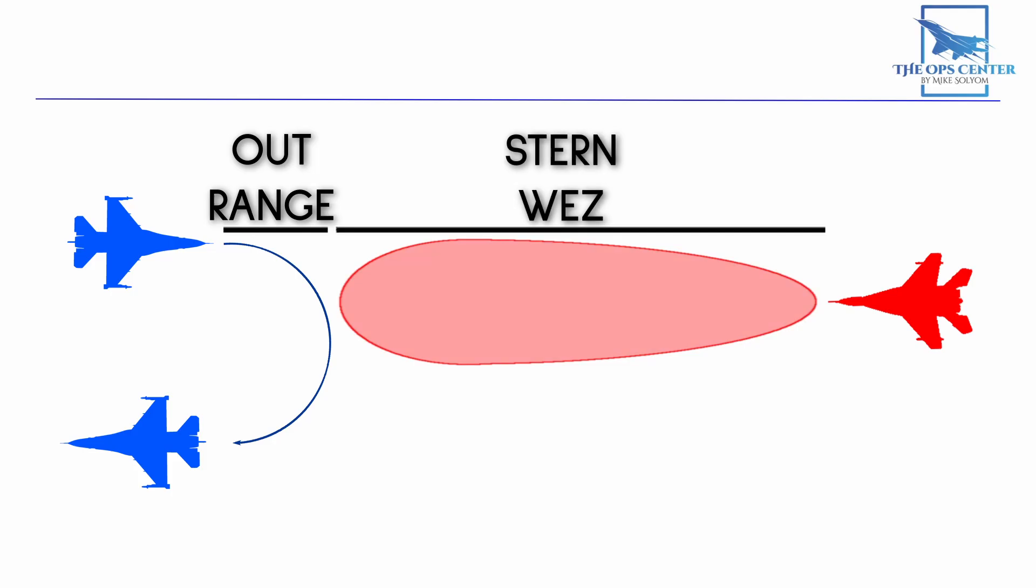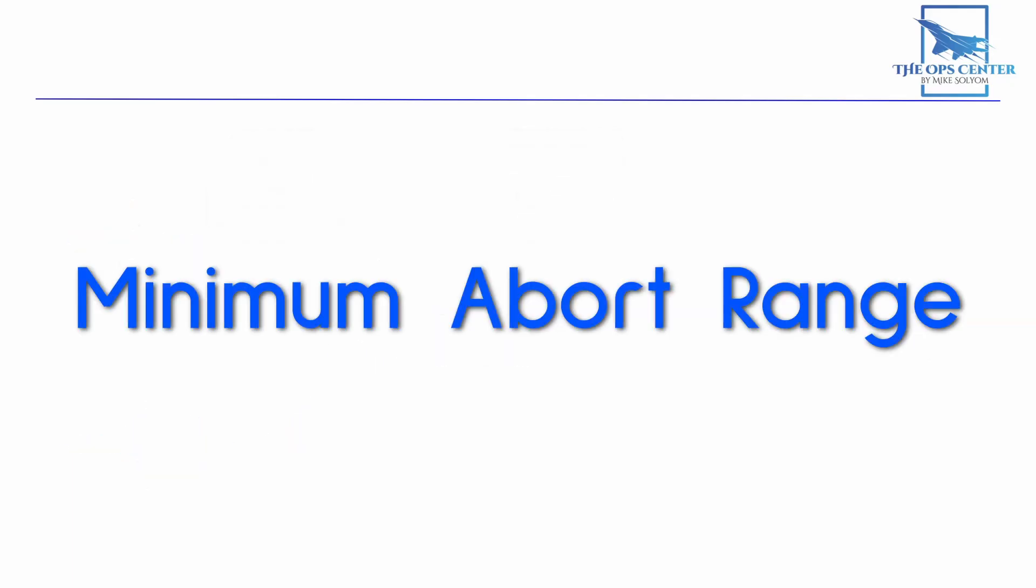Once you have the cost of the OUT figured out, you can add that number to the WEZ. Now you have a point where you can safely turn away from an opponent. At any time before reaching that point, you are secure from retaliation and can maneuver for a shot of your own. This number has its own name, Minimum Abort Range, or MAR. It works well as a tool for keeping things simple.